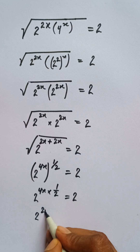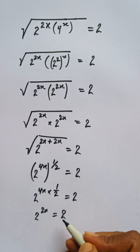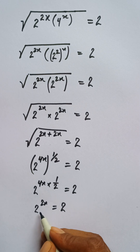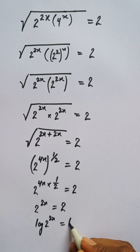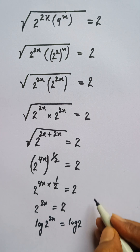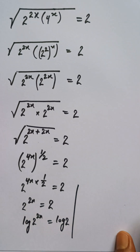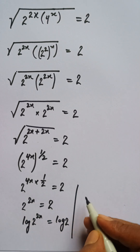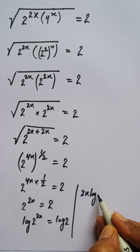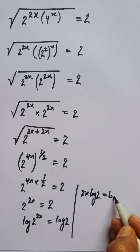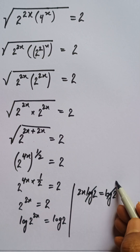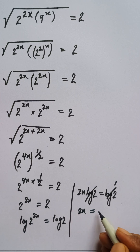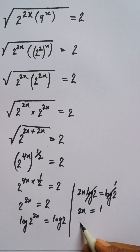Now we can say 2 to the power 2x equals 2. I'm taking log on both sides: log of 2 to the power 2x equals log 2. This becomes 2x times log 2 equals log 2. The log 2 cancels, so 2x equals 1, giving x equal to 1 upon 2.